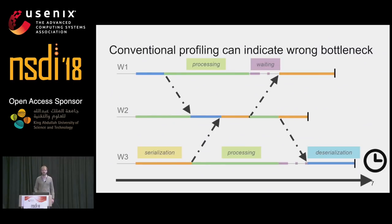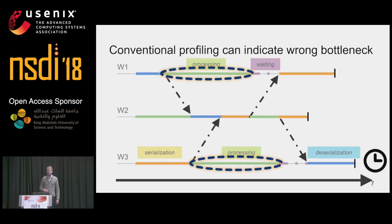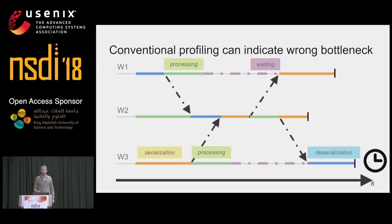Let me now show why conventional profiling can indicate wrong bottlenecks when optimizing for latency. In this diagram, I show three workers performing serialization, deserialization, and processing activities. When we apply conventional profiling here, it highlights the activities that take up most time — for example, the processing activity performed by worker one and worker three. Now we would go ahead and optimize those activities. Processing time has been reduced dramatically for worker one and worker three. However, the overall execution time of that trace has not changed at all, because conventional profiling does not take dependencies into account — the messages that we can see here.